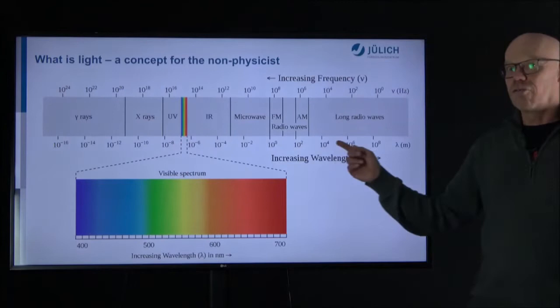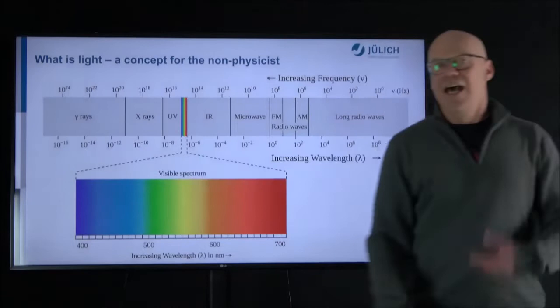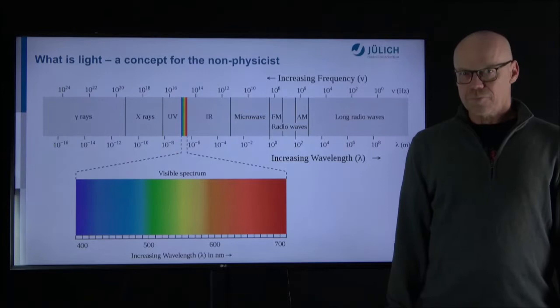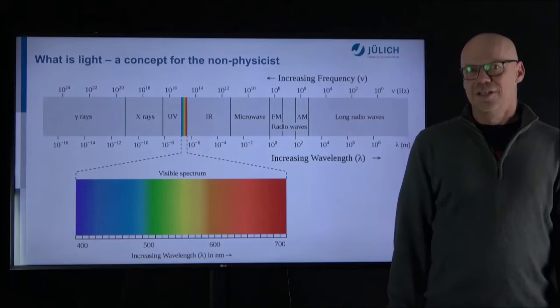If you go toward lower energy — longer wavelength — you have infrared radiation, microwave, radio waves, and so on. In the other direction, toward higher energy, you encounter UV radiation, X-rays, and gamma rays, which are really energy-rich forms of electromagnetic radiation. For today's talk, we will focus on the visible range and extend a little to either side to explain how we can use this information for measurement purposes.